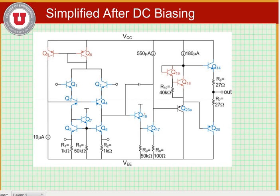The second stage, consisting of the Darlington pair Q16 and Q17, and finally the output stage consisting of Q23, Q14, and Q20. So we'll begin with the input stage.